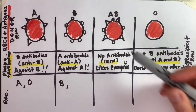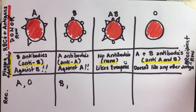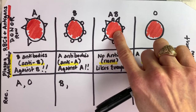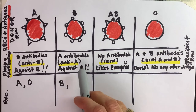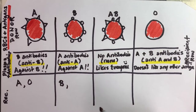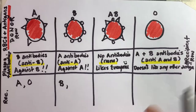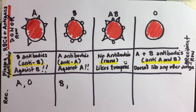Could this Type B person receive AB blood? Is there anything on an AB cell that this person doesn't like? They don't like A's, and there are A antigens on that cell, so AB is out. What about O? Is there anything on O that's offensive to a Type B person? No — so O is fine for Type B.